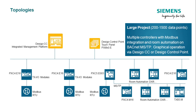For a large project which has multiple automation stations with Modbus RTU integration and room automation, DSEGO CC can be used for monitoring and graphical operations, providing multi-discipline management and extensive reporting. DSEGO control point touch panels can be used for easy local operations.